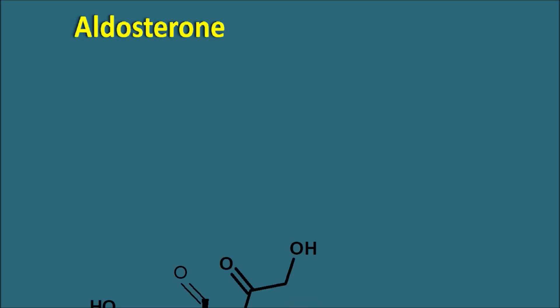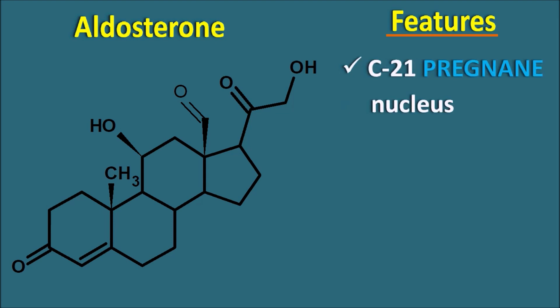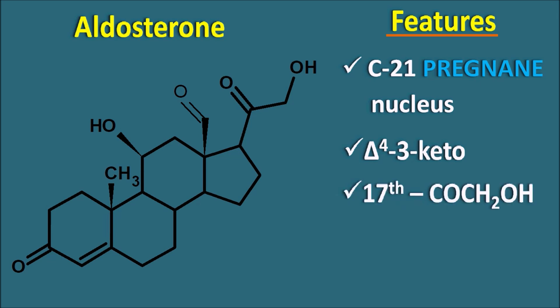Now let us see the structure of aldosterone. The structure of aldosterone is similar to that of glucocorticoids. It has a 21-carbon C21 pregnane nucleus, the delta-4, 3-keto feature — meaning a keto group at the third position and a double bond at the fourth position. Similarly, at the 17th position it is attached with a -COCH₂OH group.